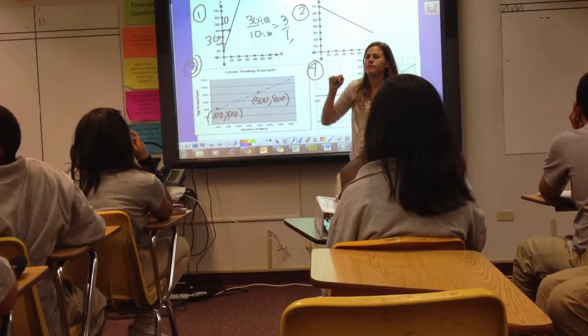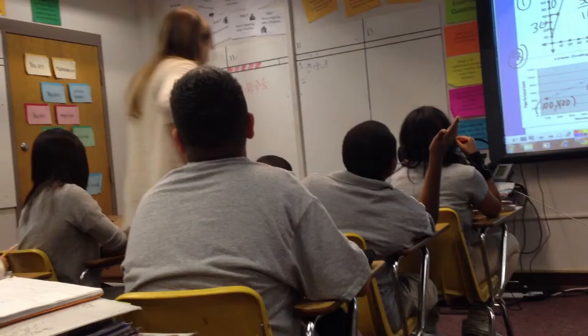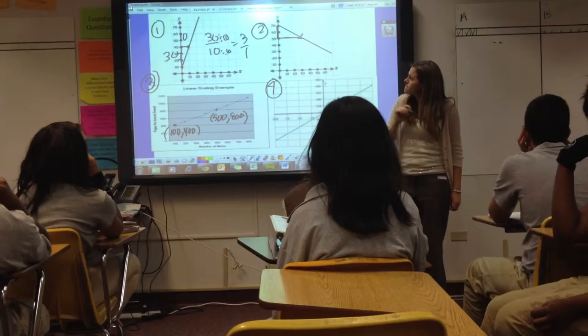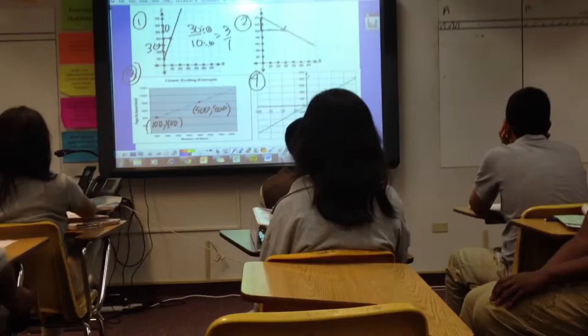3 over 1, or 3. What about number 2? Here's my slope, here's my triangle. What is my height? If I'm going from 50 to 70, what is my height? 20. I went from 50, add 20 to 50, you get 70.